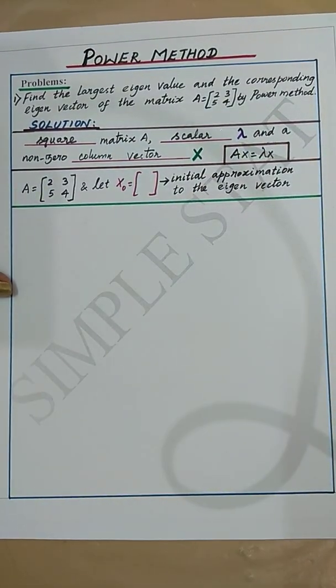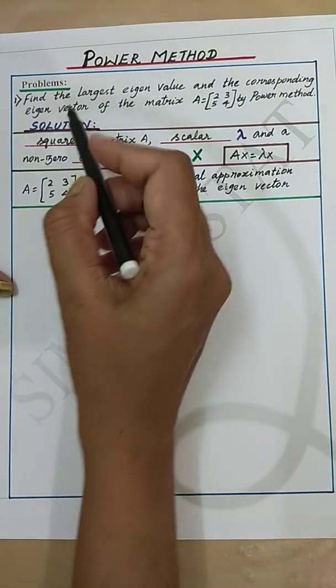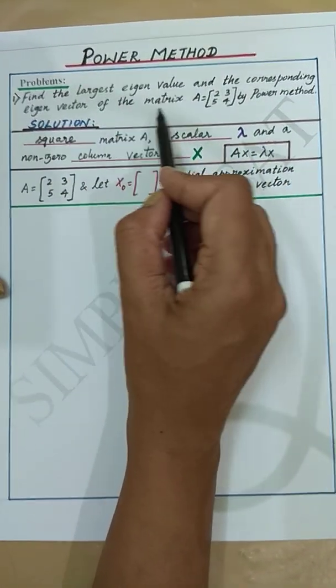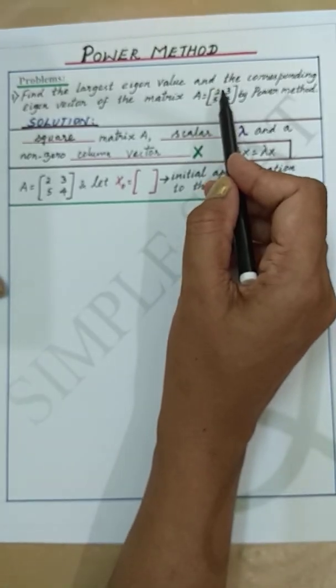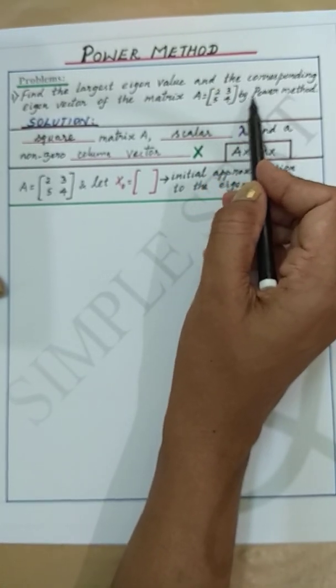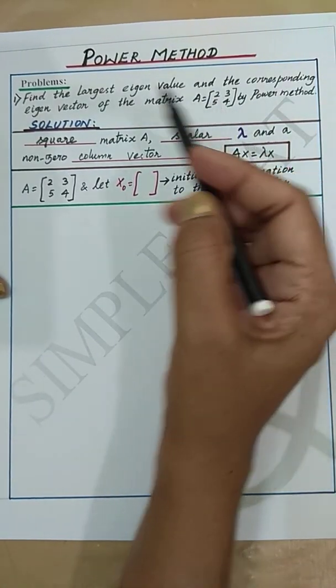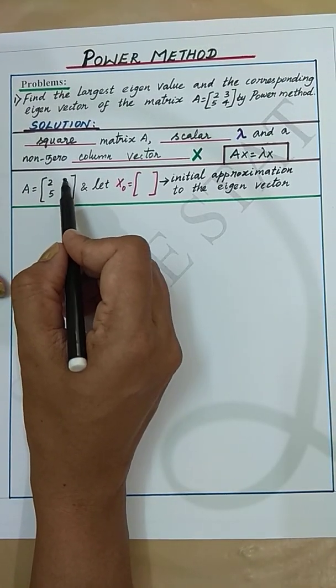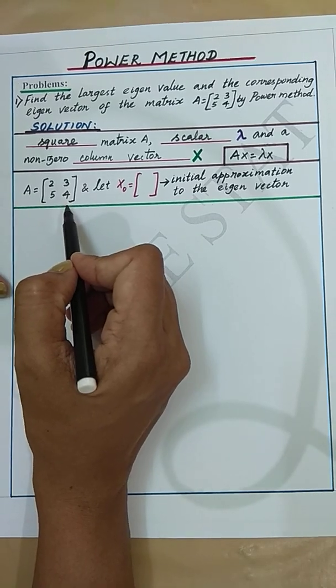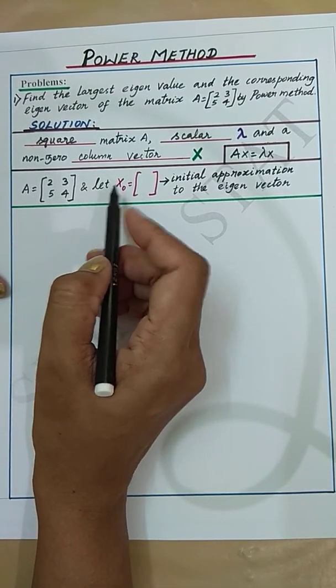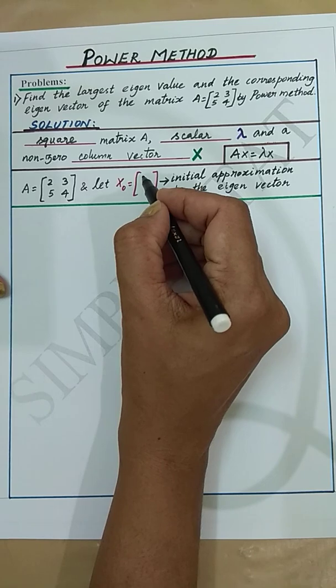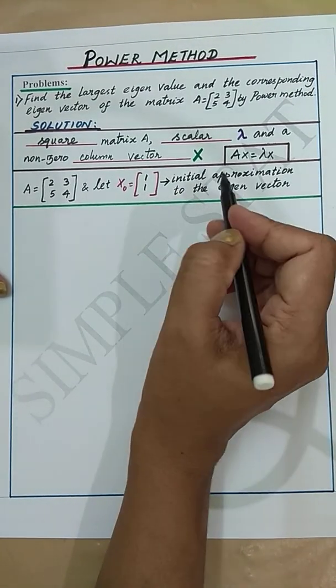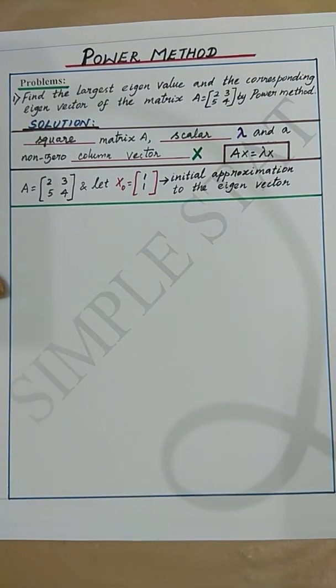Let's now proceed with the problem. Find the largest eigenvalue and the corresponding eigenvector of the matrix A equal to [2 3; 5 4] by power method. Solution: given A equals [2 3; 5 4], this is a square matrix, and let X0 equal to [1; 1] be the initial approximation to the eigenvector.